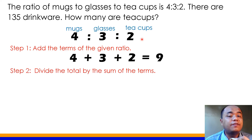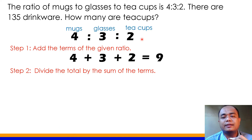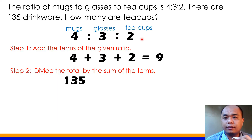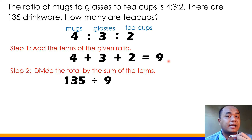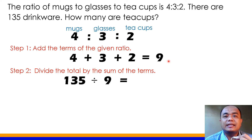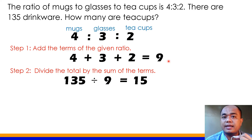Step 2: divide the total by the sum of the terms. Yung whole number na ibinigay sa problem ay 135. I-divide natin yan sa sum ng ratio, which is 9. How much is 135 divided by 9? Kung hahatiin natin ang 135 sa 9, ang resulta ay 15.